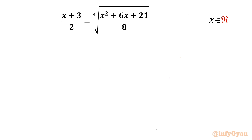Welcome back to Infigyan friends. In this video we are going to take up one interesting radical equation: x plus 3 over 2 equals the 4th root of x squared plus 6x plus 21 over 8. We have to find out real solutions only. So let's get started.